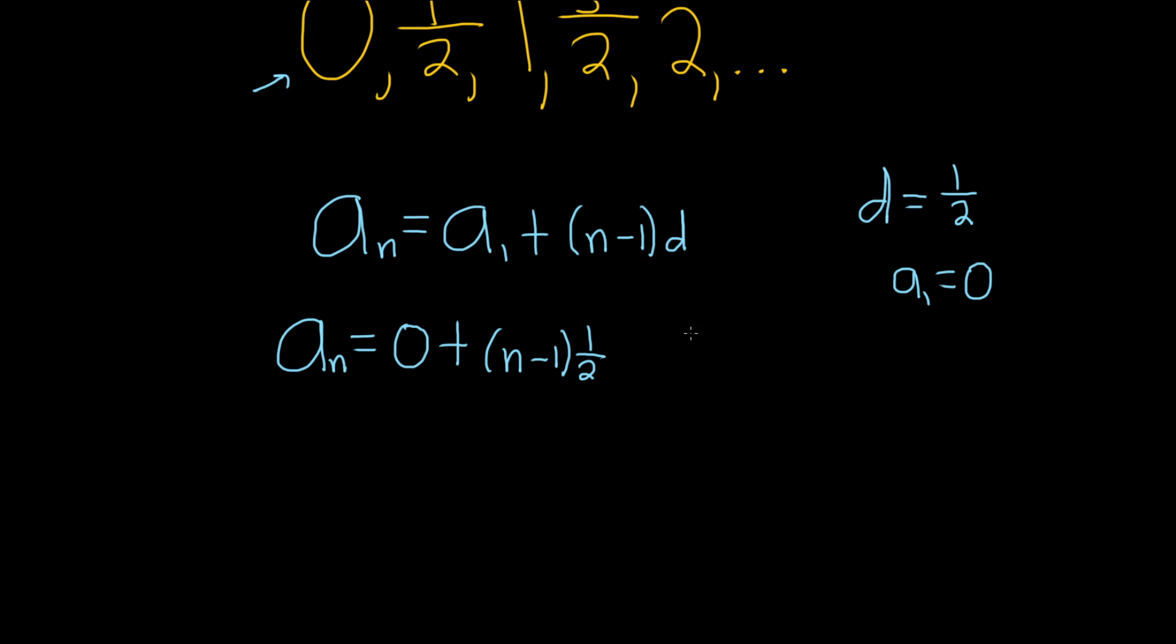The last thing to do maybe is distribute the 1 half. So a sub n is equal to, let's see, 1 half times n is 1 half times n. And 1 half times negative 1 is negative 1 half. And that would be the final answer.